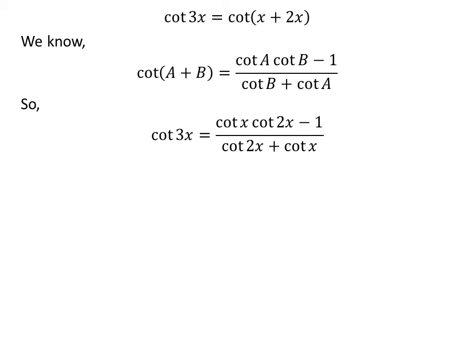Applying the above identity in the expansion of cotangent of 3x gives us: cotangent of 3x is equal to cotangent of x times cotangent of 2x minus 1, upon cotangent of 2x plus cotangent of x.